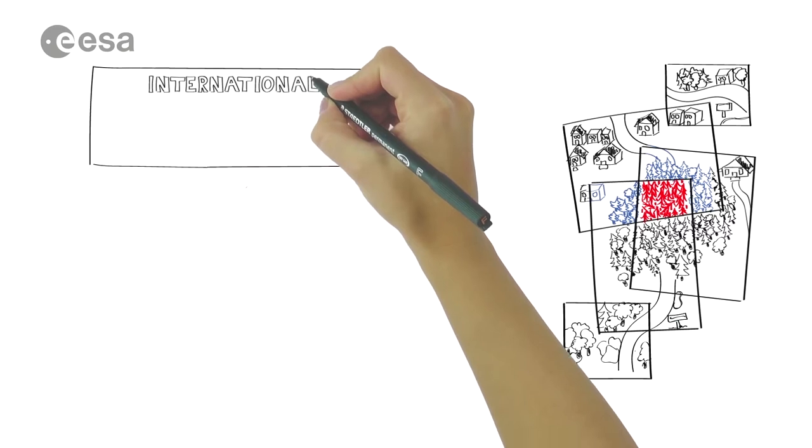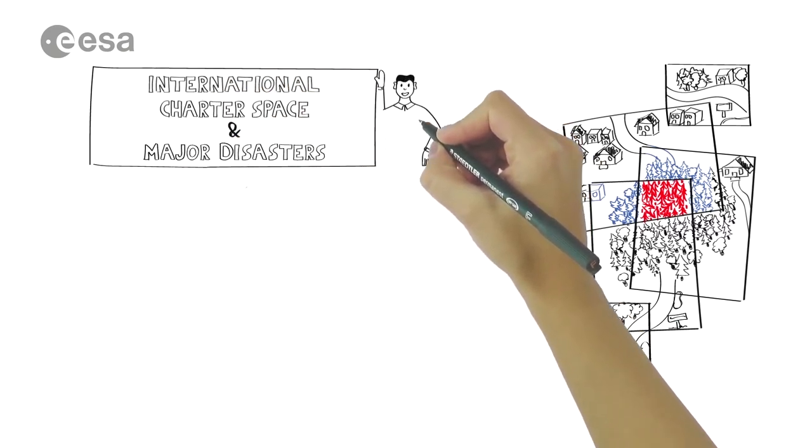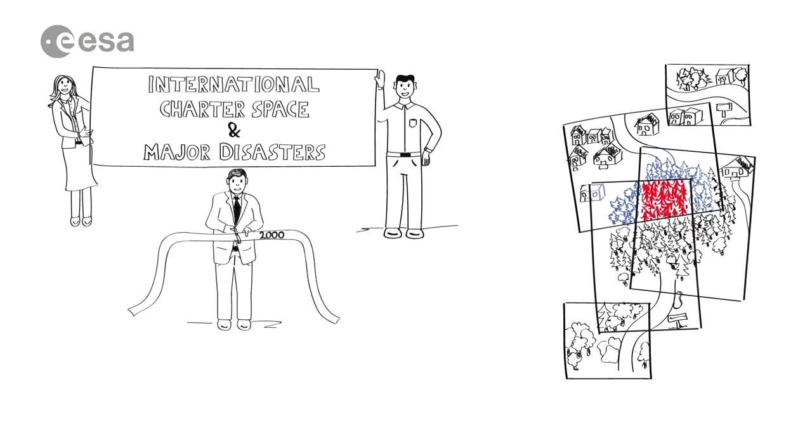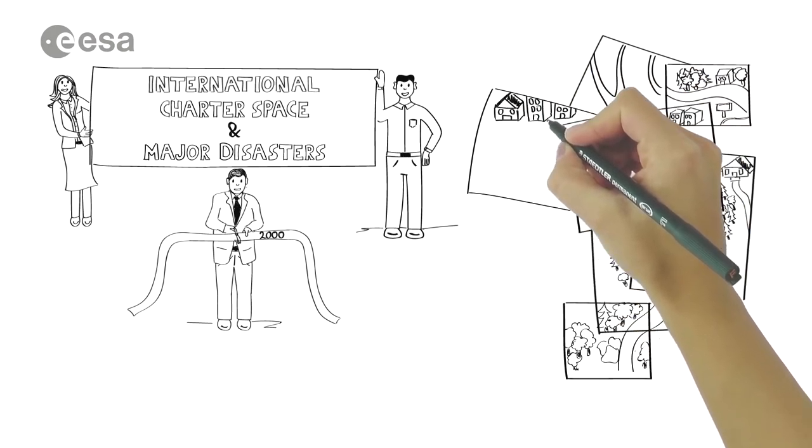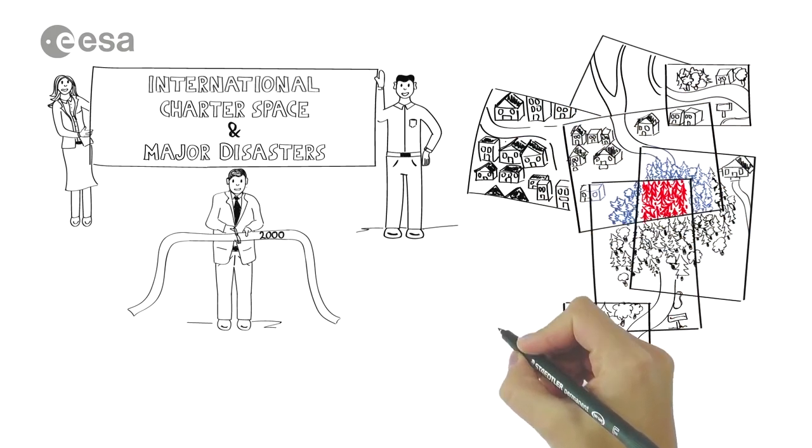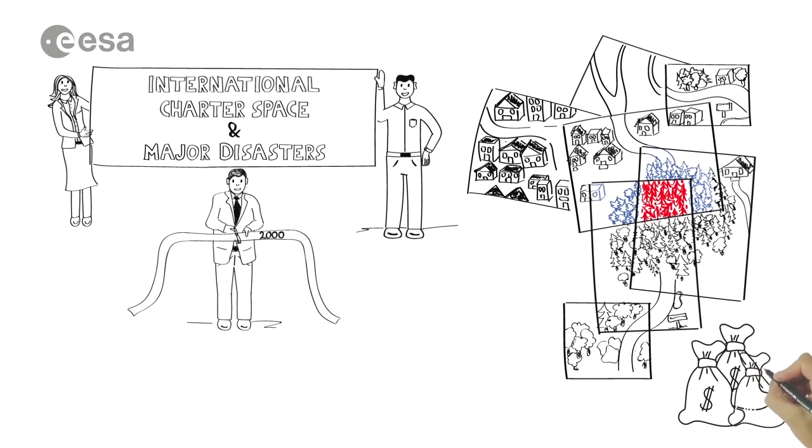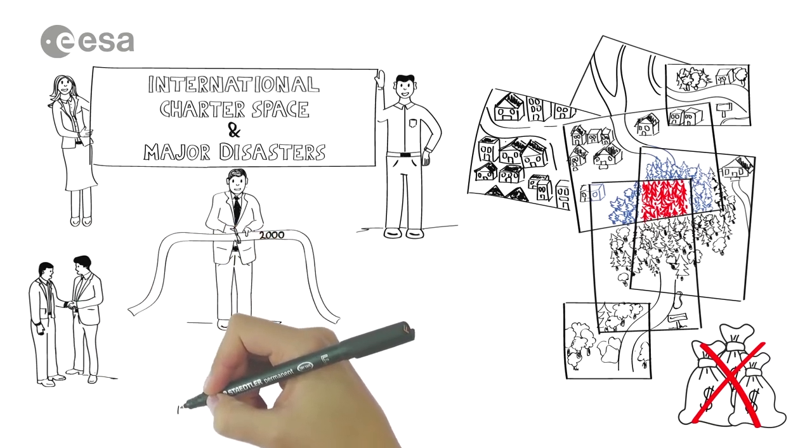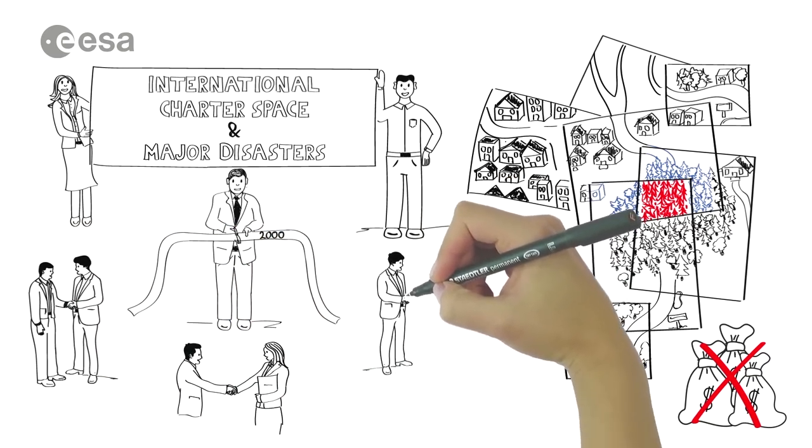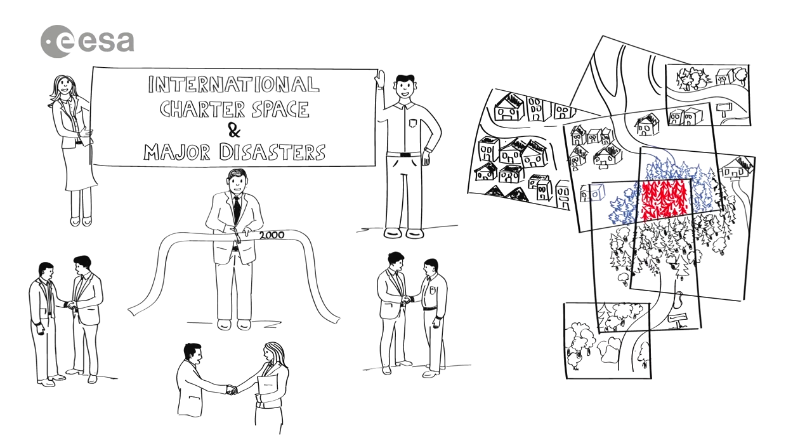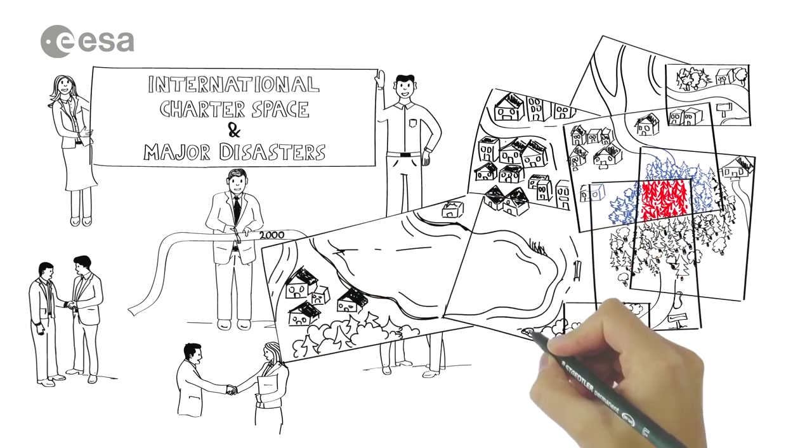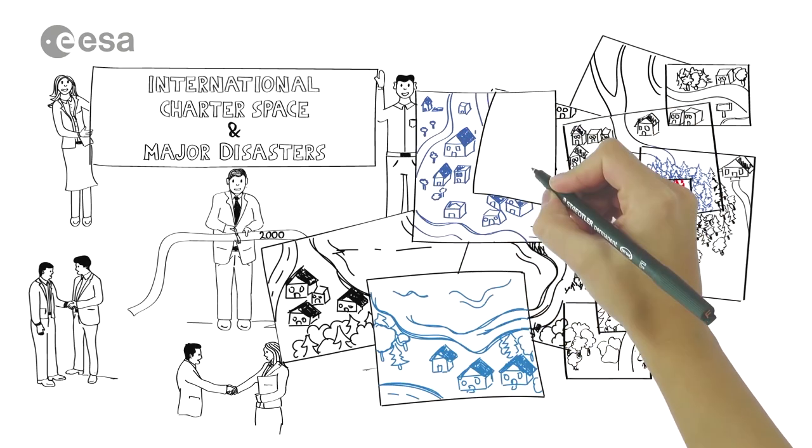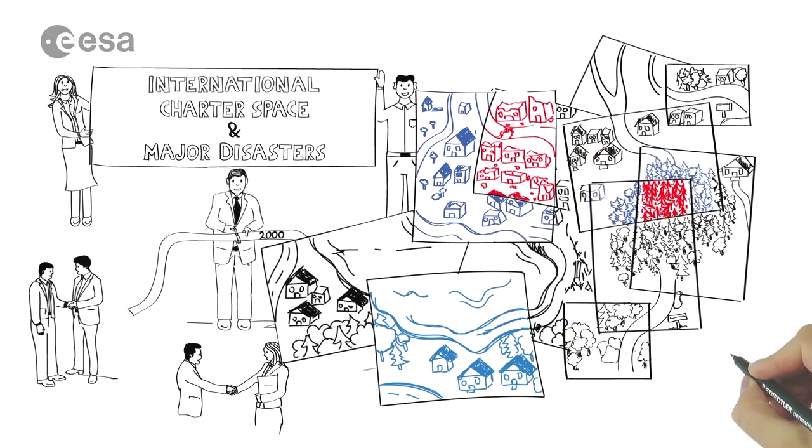This is the idea behind the International Charter Space and Major Disasters, founded in the year 2000 by the European, French and Canadian space agencies. Providing the best available satellite pictures to help with disaster relief and recovery anywhere in the world, and doing it without expecting anything in return. Today, more countries from all around the world have chosen to commit their satellites to help provide the information necessary to understand the impact of major disasters, what has happened, who has been affected and how to respond effectively. And every country in the world can access this information through the universal access the International Charter offers.